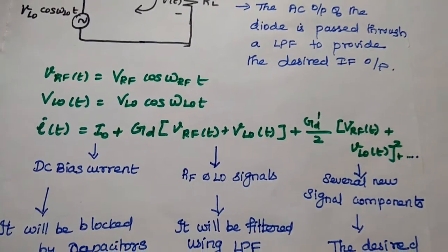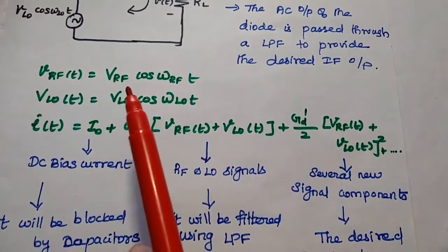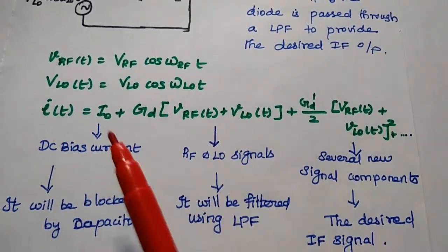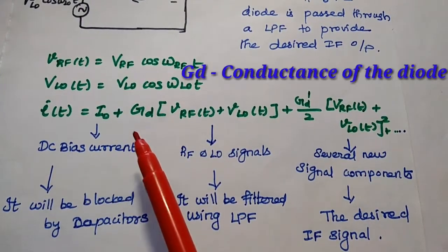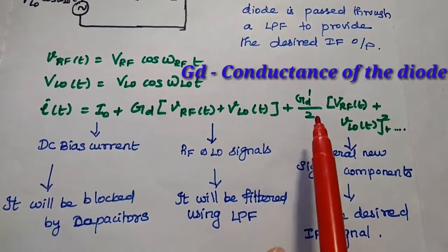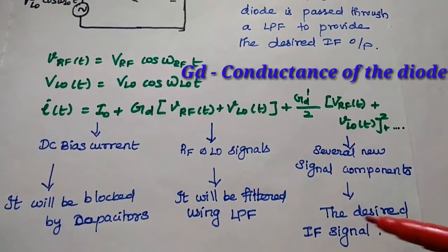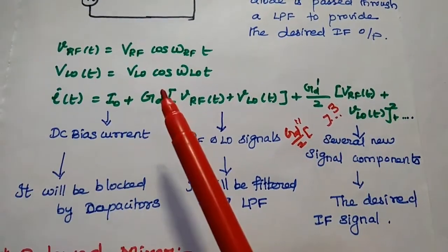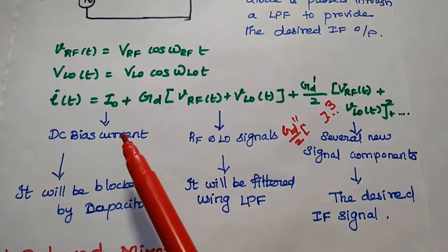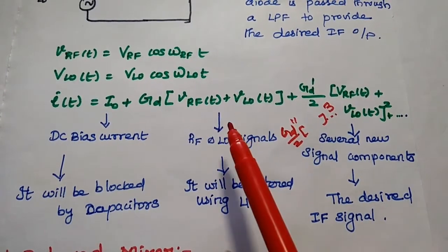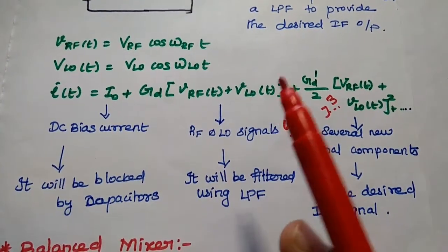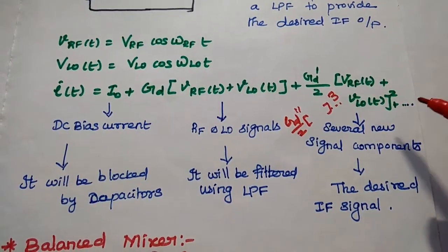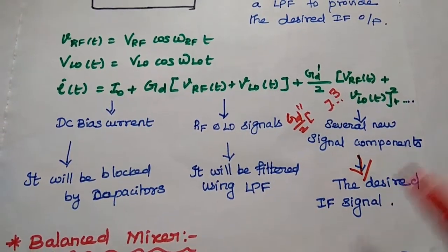At the output side, we get the desired intermediate frequency signal. The input signal is V_RF(t) = V_RF cos(ω_RF · t) and the local oscillator signal is V_LO(t) = V_LO cos(ω_LO · t). The current through the load resistor is given as I₀ + G_D·[V_RF(t) + V_LO(t)] + (G_D'/2)·[V_RF(t) + V_LO(t)]² + (G_D''/2)·[V_RF(t) + V_LO(t)]³ and so on. Here I₀ represents the DC bias current, which is blocked by capacitors. The second term represents the combination of the two input signals and is filtered by the low-pass filter, while the remaining terms produce new signal components of different frequency ranges from which the desired IF signal is selected.